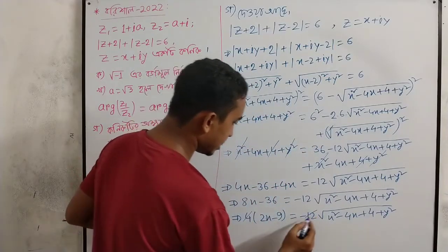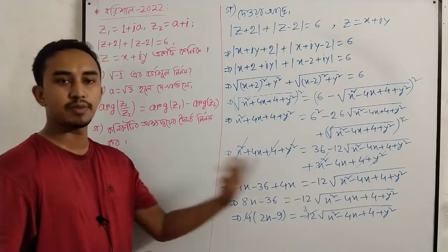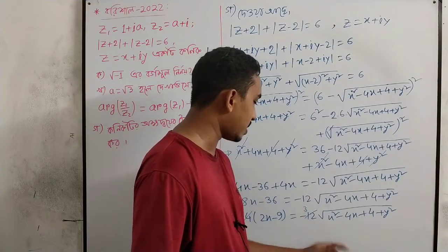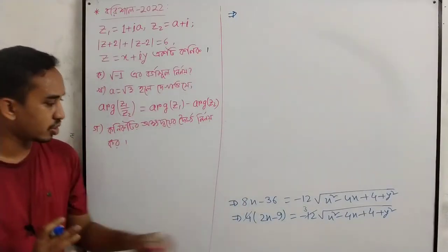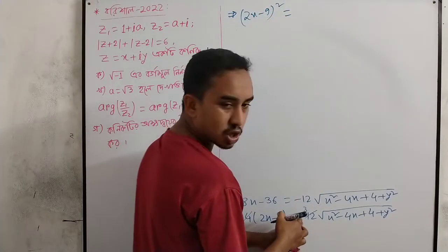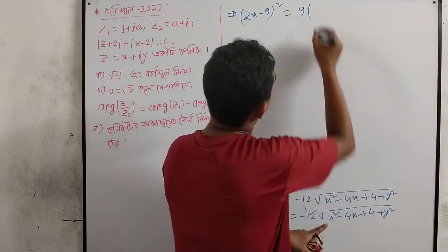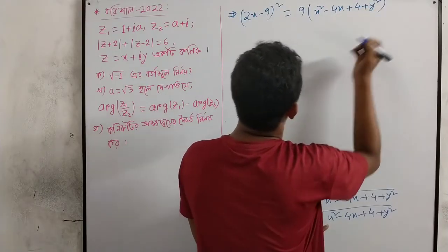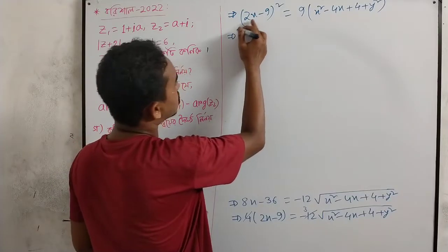So I will calculate: 4x plus 4x minus 37 equals minus 2 root of x squared minus 4x plus 4 plus y squared. Then 2x minus 39 equals minus 2 root of x squared minus 4x plus 4 plus y squared. A minus 3 root of x squared. Then rho squared equals minus a rho squared plus 3 rho squared, giving x squared minus 4x plus 4 plus y squared. This is a minus 2x rho squared.